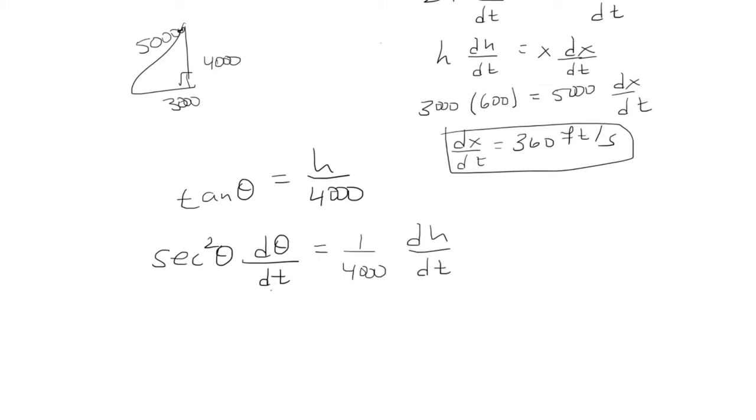So we're looking for d(theta)/dt. We have 4,000 secant squared theta d(theta)/dt equals dh/dt.